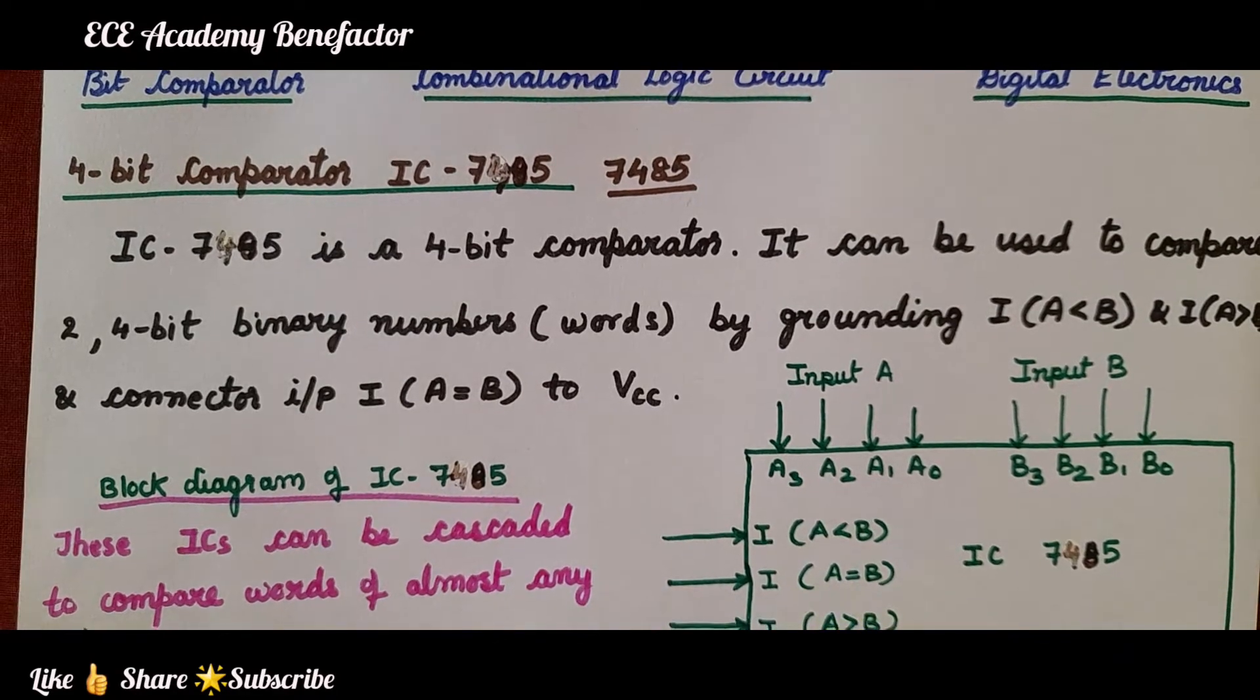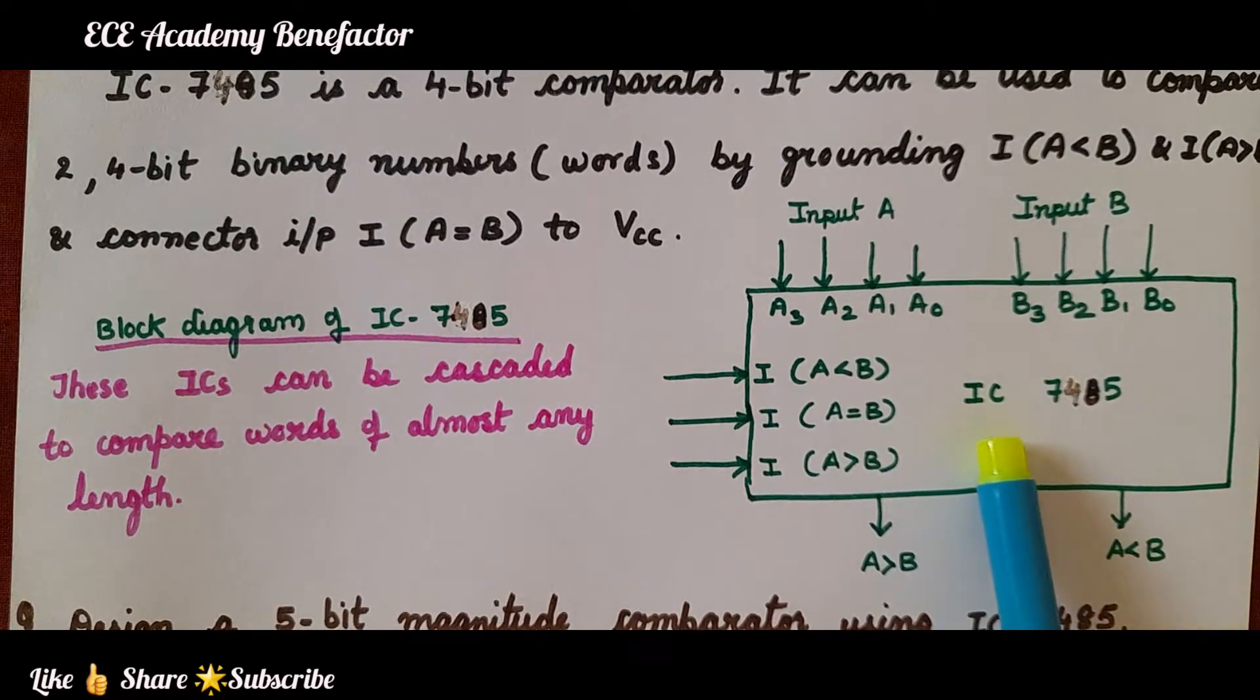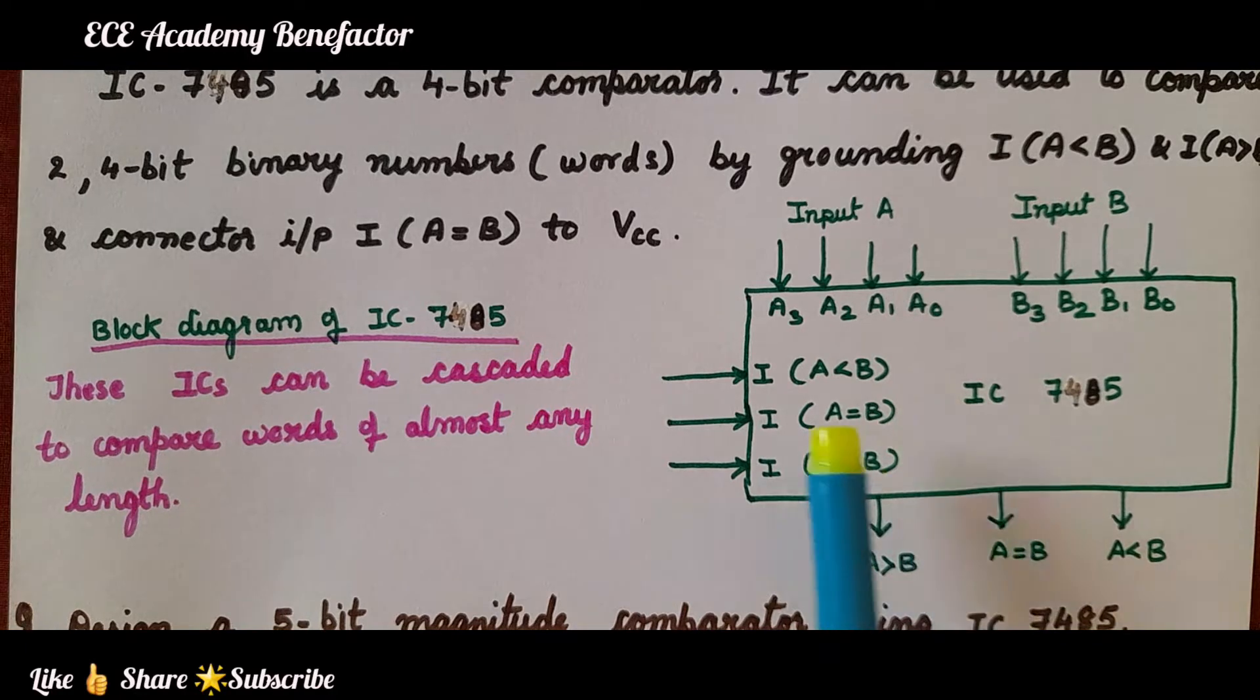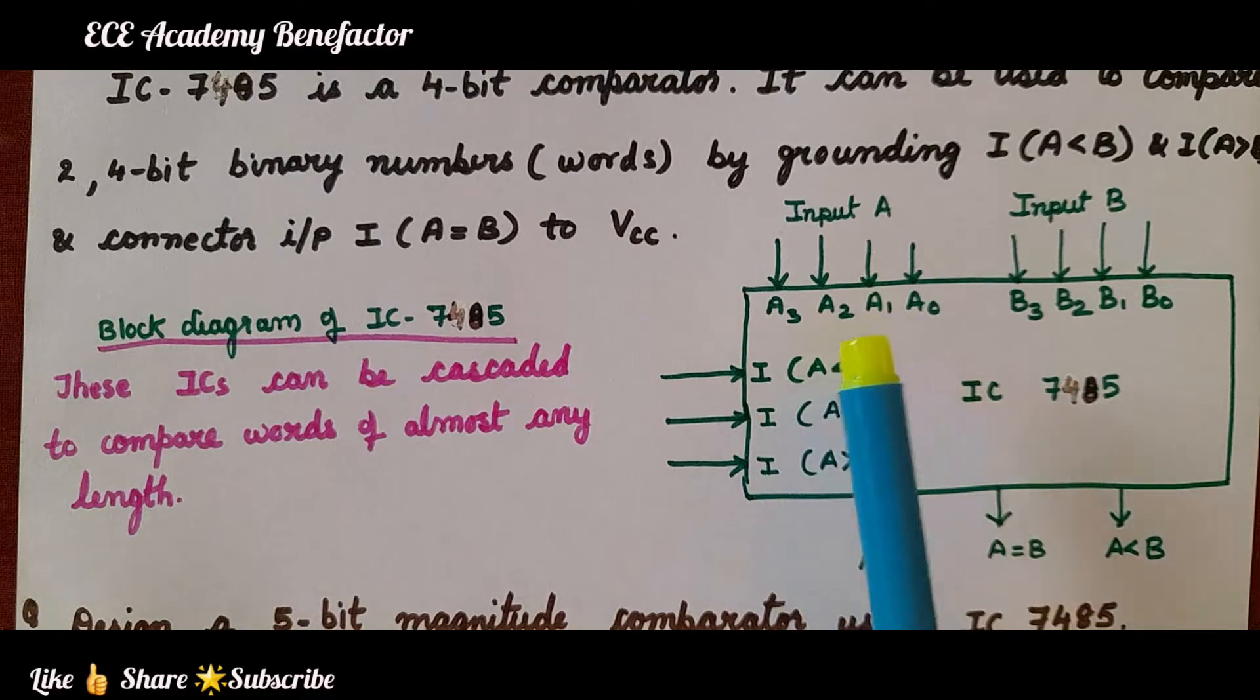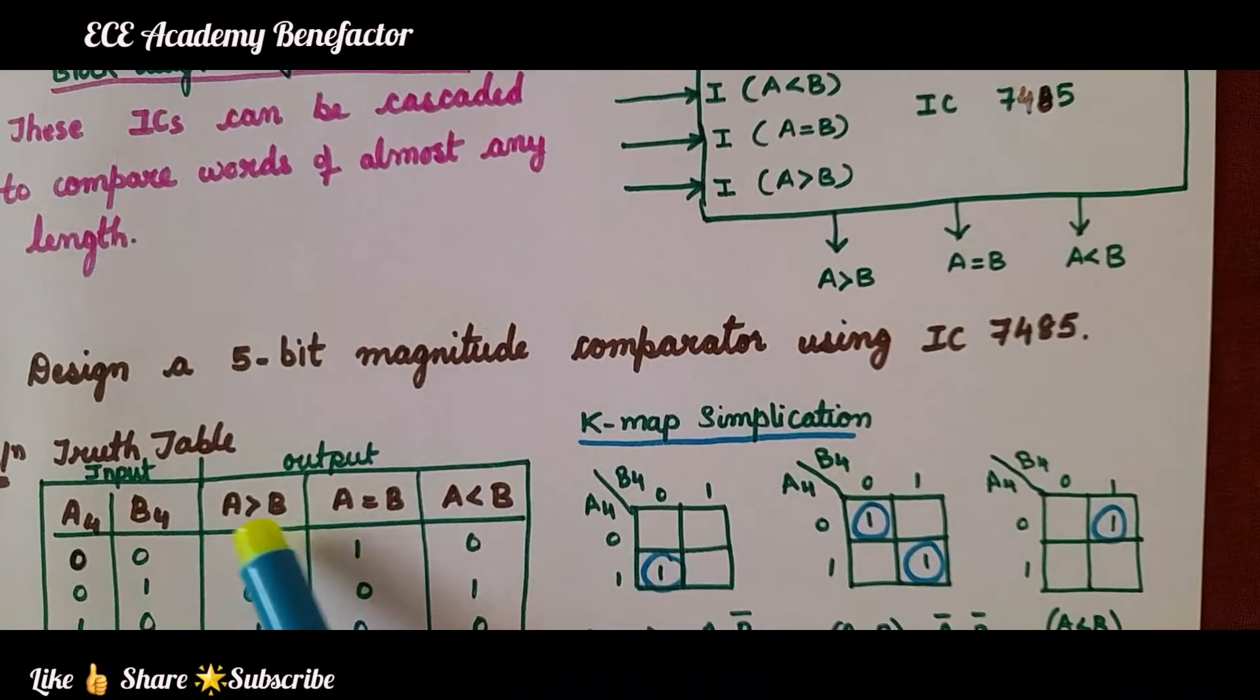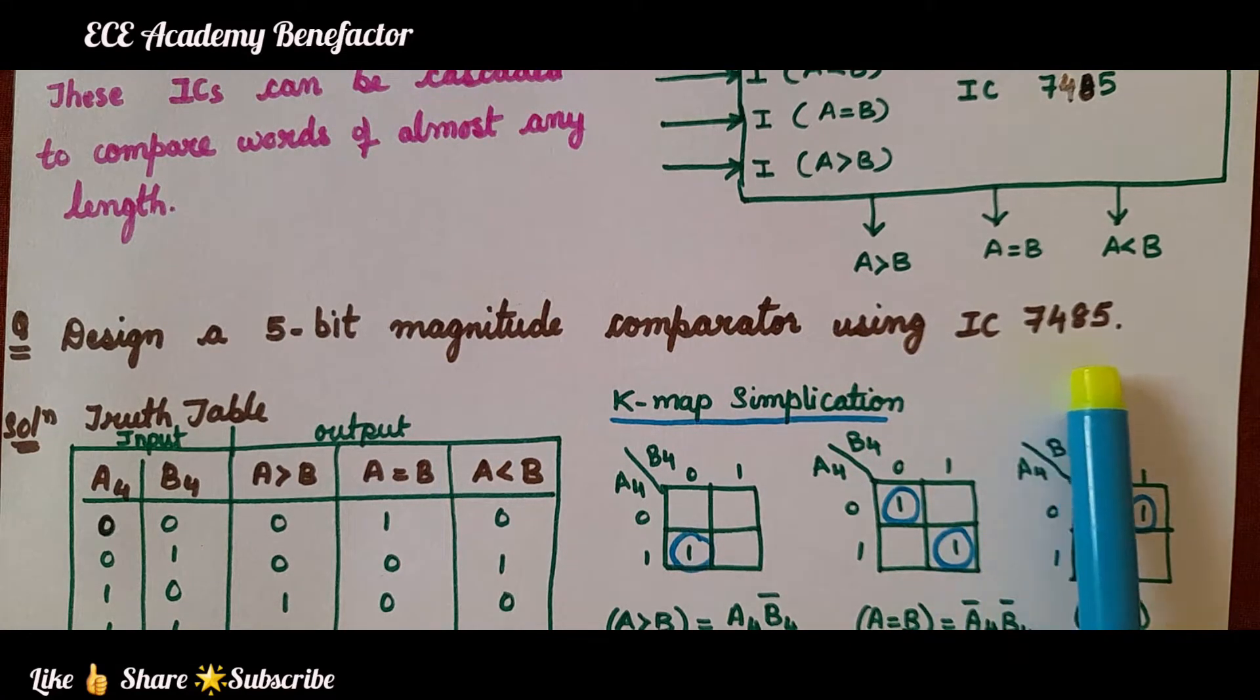This is a block diagram. One important point is these ICs can be cascaded to compare words of almost any length. This is a 4-bit comparator, but when it is connected in cascading, we can compare two binary numbers of any length. Now, the question is: design a 5-bit magnitude comparator using IC7485.